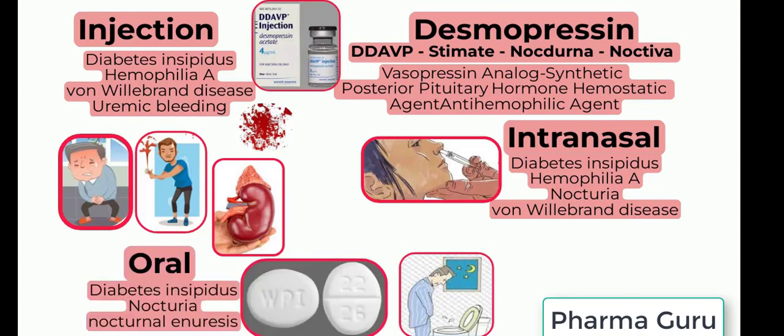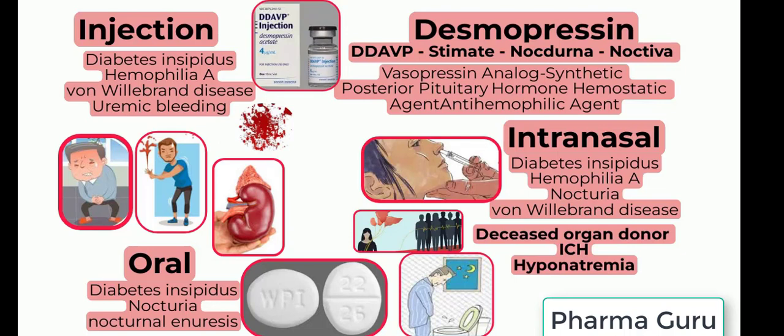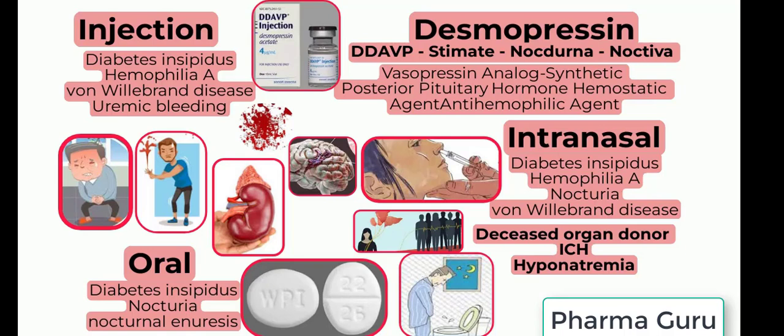The intranasal form can also be used for mild to moderate von Willebrand disease type 1. Oral dosage form can be used for the treatment of central diabetes insipidus, refractory nocturia, and primary nocturnal enuresis. Off-label uses include management of deceased organ donors, management of intracranial hemorrhage associated with antiplatelet agents, prevention of overly rapid sodium correction in patients with chronic severe hyponatremia, uremic bleeding, and mild to moderate type 2 von Willebrand disease.